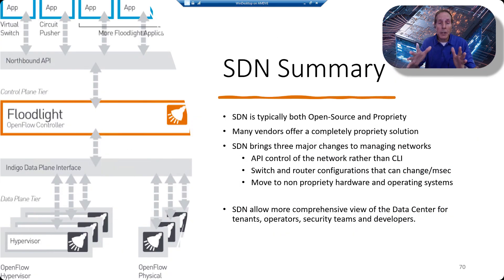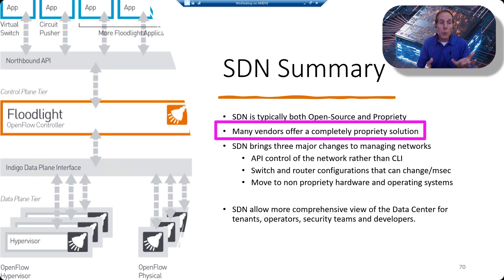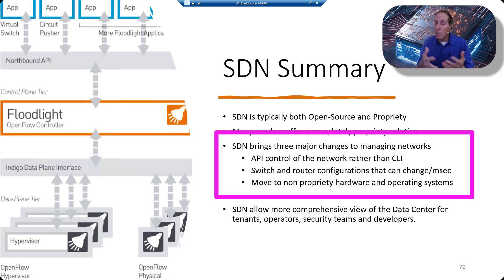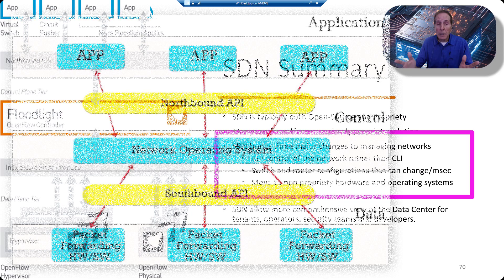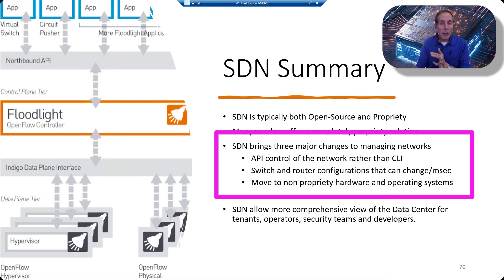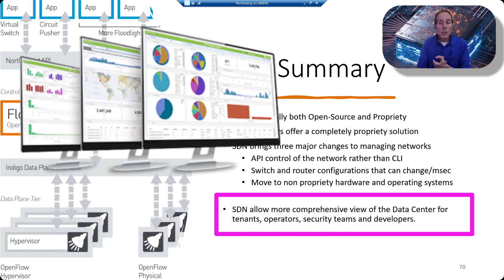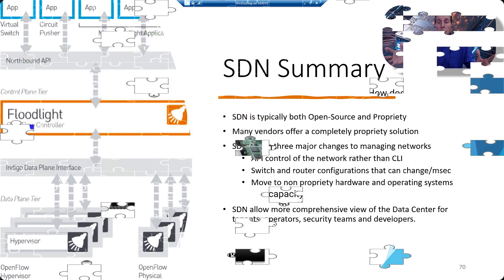In summary, SDN is typically both open source and proprietary, though many vendors offer a completely proprietary solution. SDN brings three major changes to networking: API control of the network rather than command line; switch and router configurations that can change in milliseconds; and a move to non-proprietary hardware and open source operating systems. SDN allows a more comprehensive view of the data center for tenants, operators, security teams, and developers.